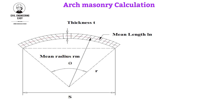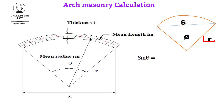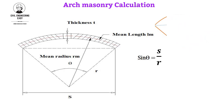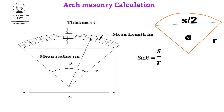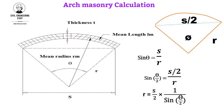Now calculate the sine of theta. From the given figure, sine of theta is equal to perpendicular divided by hypotenuse, where perpendicular is s and hypotenuse is r, so sine of theta equals s divided by r. Taking sine of half theta, that will be equal to (s/2) divided by r. Separating the simple radius from this equation, r equals (s/2) multiplied by 1 divided by sine of (theta/2).